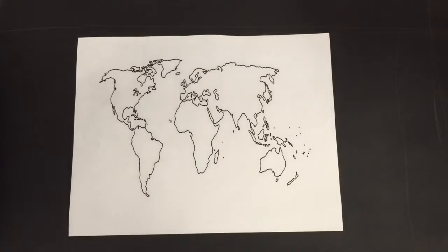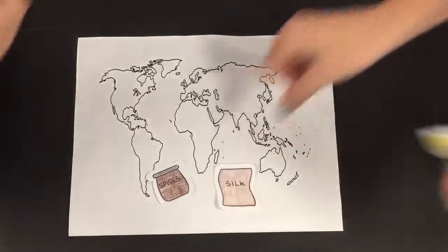John Cabot's intentions were to trade with Asia, but is that really what he did? For hundreds of years, trade between Europe and Asia was good along the Silk Road, trading spices, silk, and possibly gold.